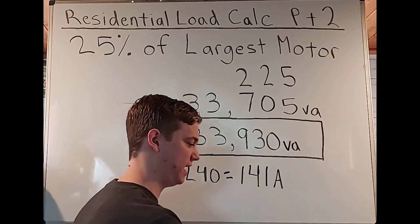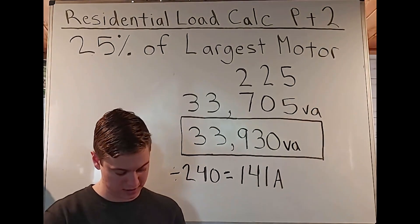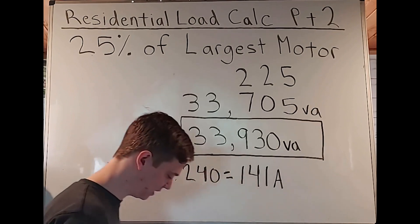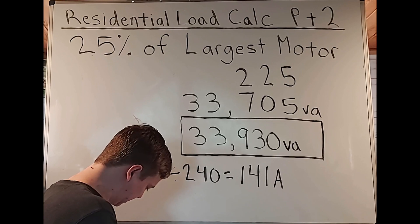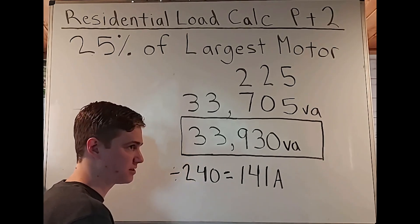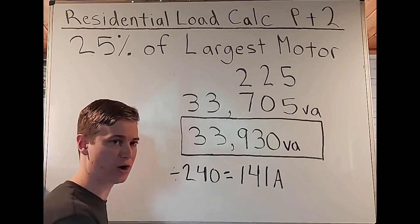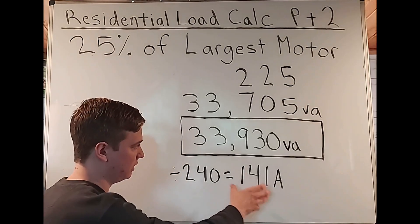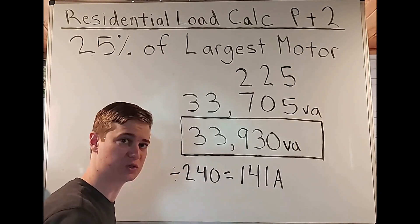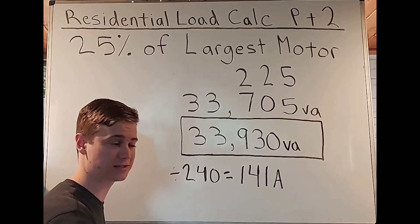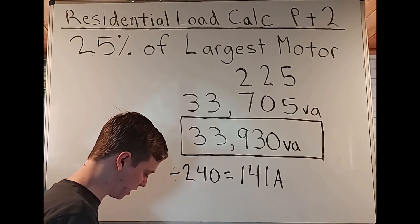So now that we have 141 amps, we can now go over to table 240.6A and find our standard amperage rating for fuses and time circuit breakers. We see 125 and 150. Now we got to tell ourself and understand the fact that we're using a breaker here. So if we upsize the breaker, then we're saying that we're going to allow more current to be allowed to be supplied to those wires.